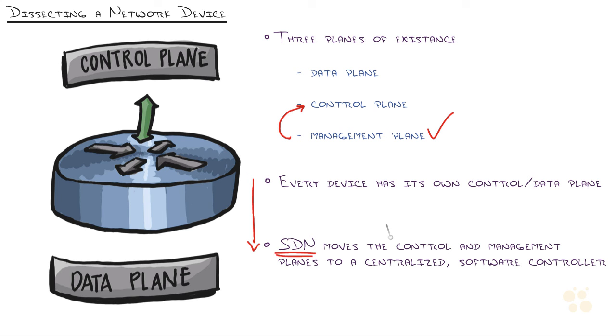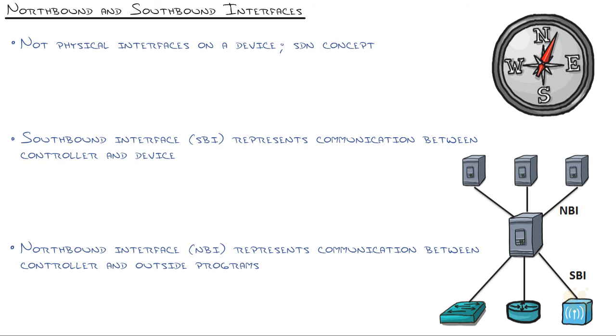What SDN does is say, well, why don't we take those two planes out and move them to a centralized software controller, leaving the devices with just a data plane. They're still the workhorses. They're still forwarding packets. But instead of us having to manage each one individually, let's have a controller. It's often called an SDN controller where all that centralized instruction comes from.